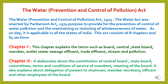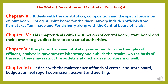Chapter 2 elaborates about the constitution of central board, state board committees, terms and conditions of service of members, and meetings of the boards. It also explains delegation of power to chairman, member secretary, officers and other employees of the board. Chapter 3 deals with the constitution, composition and special provisions of joint board — for example, a joint board for the river Cauvery includes officials from Karnataka, Tamil Nadu and Pondicherry along with central board officials. Chapter 4 deals with the functions of the state board, central board and their powers to give directions to concerned authorities.